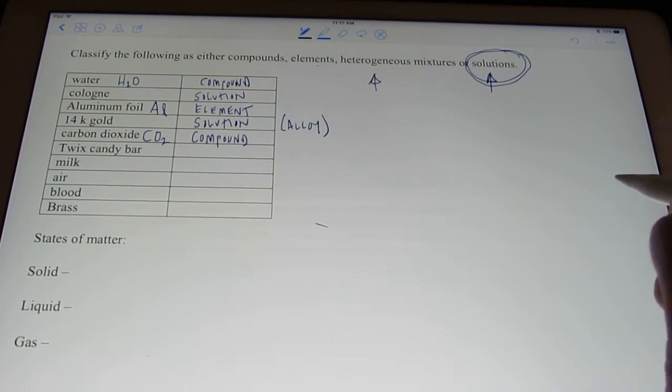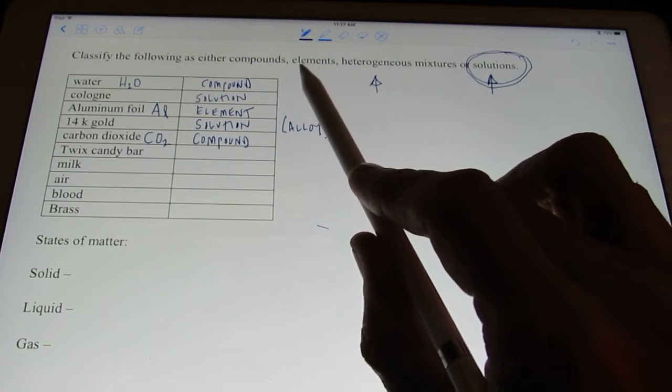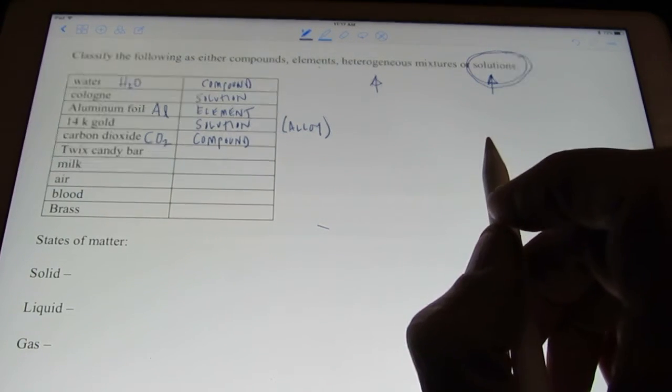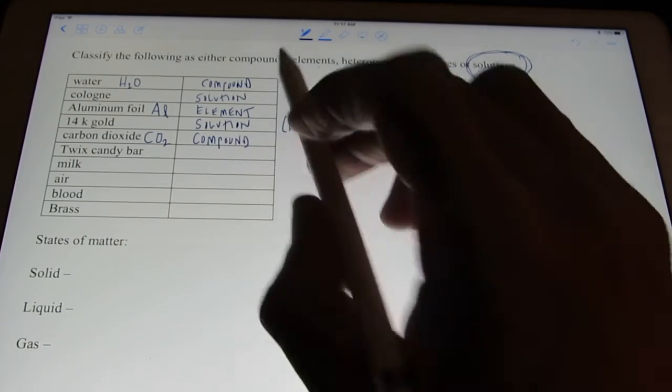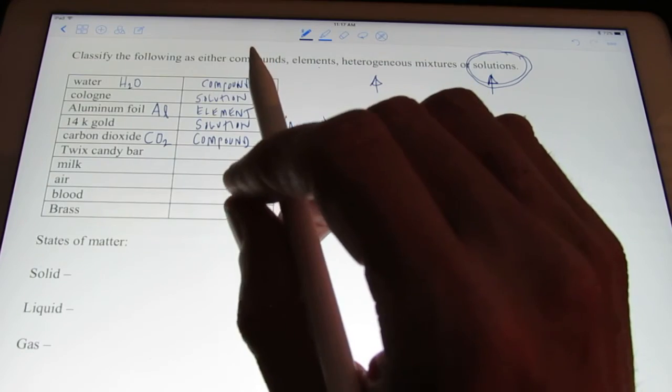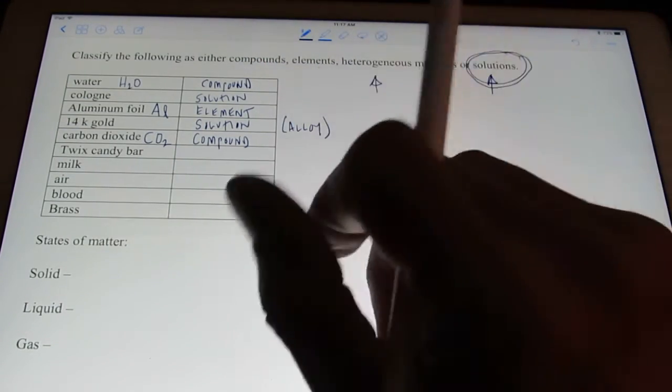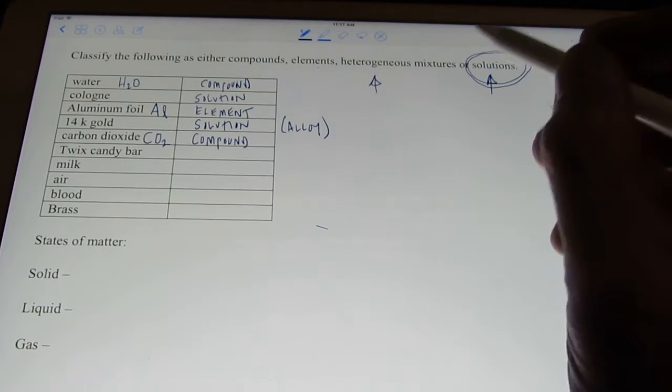How about a Twix candy bar? Well, okay. Let's get the obvious one out. It's not an element. We don't have an element called Twix candy bar. And it's not just a compound. Isn't it a mixture of several pure substances put together? You have your chocolate and your caramel and your cookie thing. And there's some air in there as well. It's obviously a mixture.